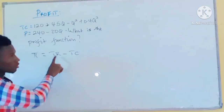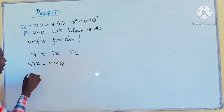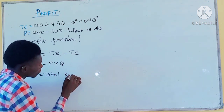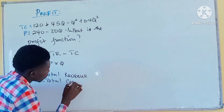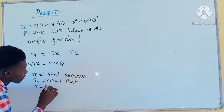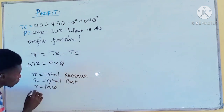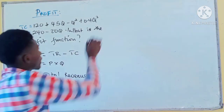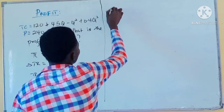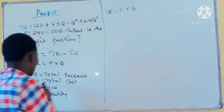Do we know total revenue? No. Do we know total cost? Yes — there is a total cost equation given. But we don't know total revenue. To find total revenue, we can say total revenue equals price times quantity. TR is total revenue, TC is total cost, P is price, and Q is quantity.